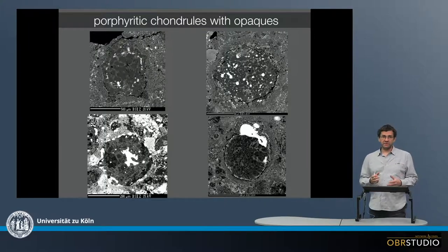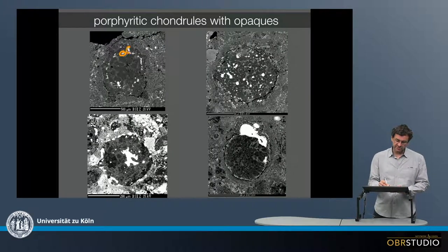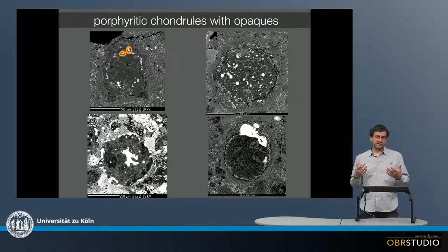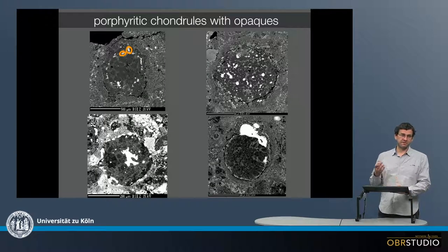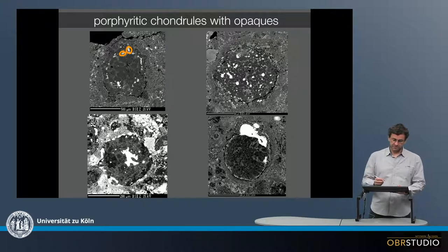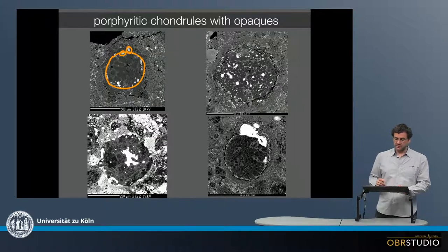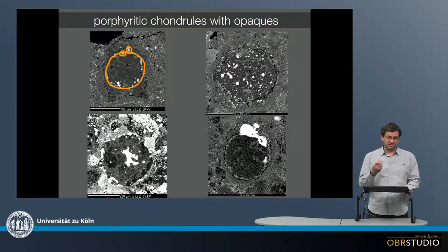The iron is very often located, particularly in type 1 chondrules, in opaque phases like metal. The metal is always bright in backscattered electron images because these are Z-contrast images — atomic number contrast — and iron has a high atomic number, almost twice that of magnesium or silicon, so it backscatters more electrons. In some cases these opaques have a concentric structure within the chondrule.